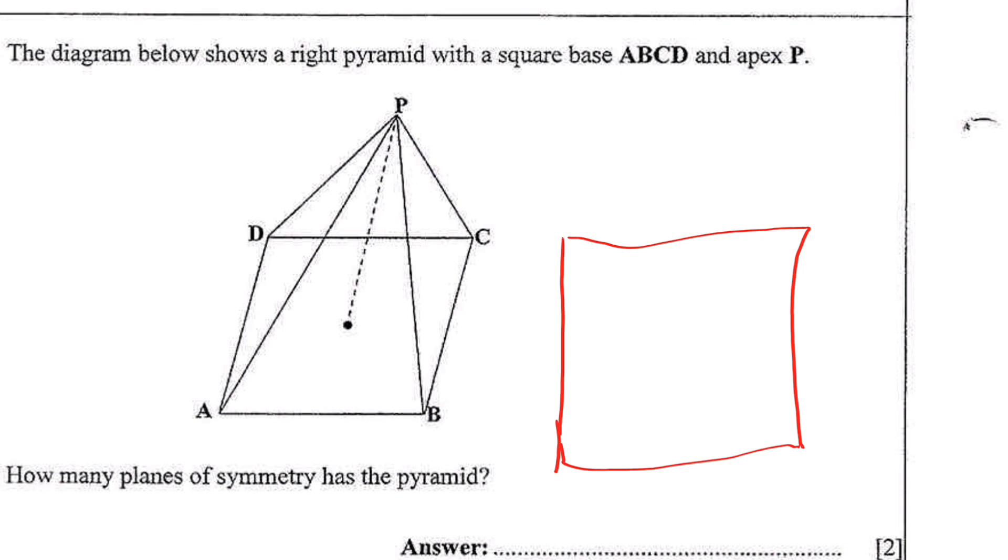Here, or lines of symmetry, this can be folded here. You can fold this one like this and it'll be equal. You can still fold it like this and still be equal.